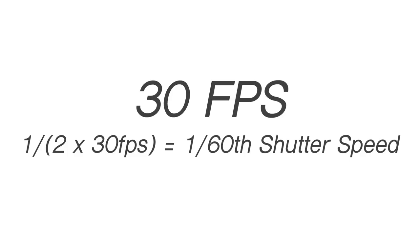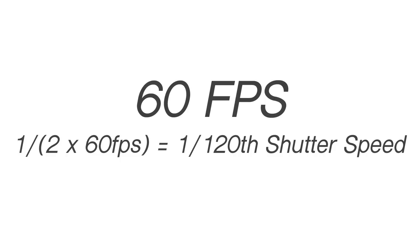Now let's talk about something called the 180 degree shutter angle rule. This rule dates back to old film cameras, but it's still applicable with today's digital video. It says that your shutter speed should be 1 over double your frame rate. So when you're shooting 30 frames a second, you should have a 1/60th of a second shutter speed. When you're shooting 48 frames a second, you should have a 1/96th of a second shutter speed, although most cameras will round this up to 1/100th of a second. And when you're shooting 60 frames per second, you'll want to shoot at 1/120th of a second shutter speed.